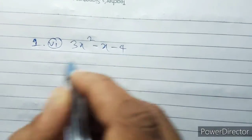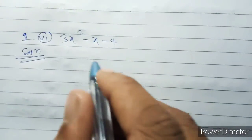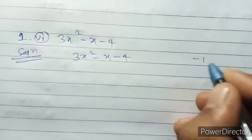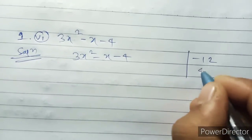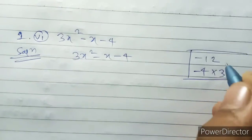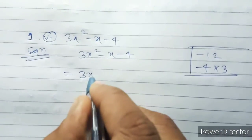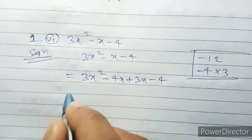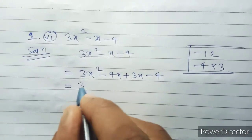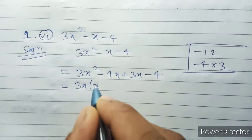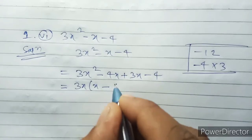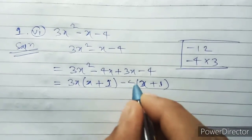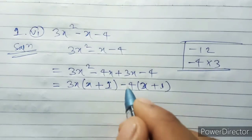Number 2: 3x squared minus x minus 4. Solution: 3x squared minus x minus 4. 4 into 3 is minus 12, so minus 12. Equal 3x squared minus 4x plus 3x, splitting the middle minus x to give up minus 4. Equal x common, 3x minus 4, plus 1 into 3x minus 4.